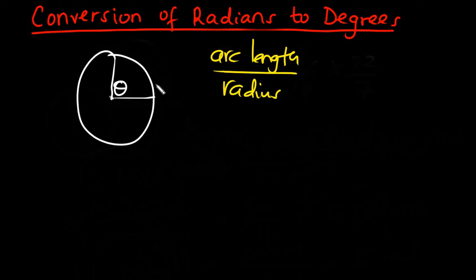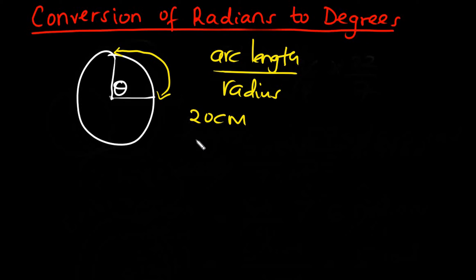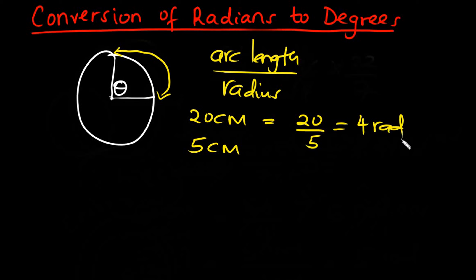So the arc length is the distance from this point to this point — this part of the circumference, from this point all the way to that point. So if the arc length is 20 cm and the radius is 5 cm, then this angle theta in radians will be 20 divided by 5, which is equal to 4 radians.